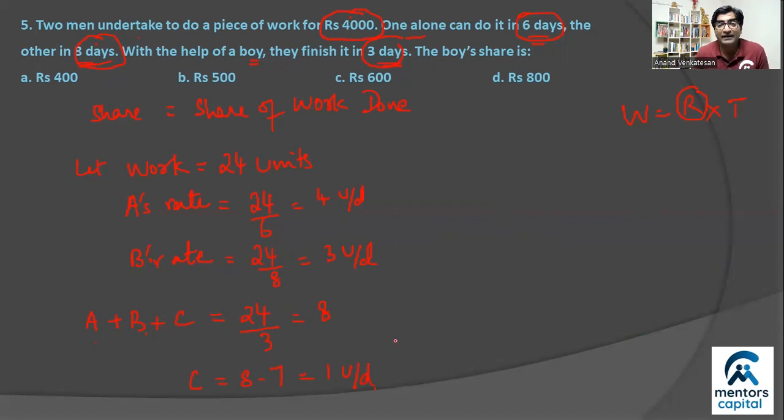And if they work together, obviously all of them work for the same amount of time. All of them work for three days each. Which means ratio of the work done by A, B and C will actually be the ratio of their rates. Rate of A, rate of B, and rate of C, which is nothing but 4 is to 3 is to 1. So this ratio will work with money.